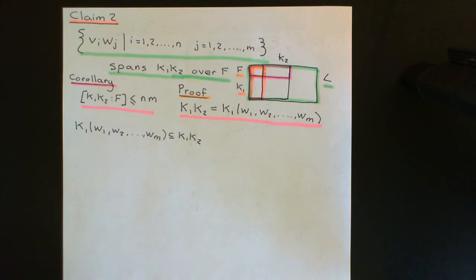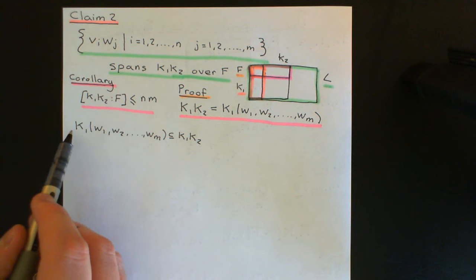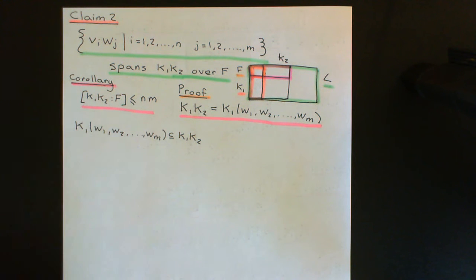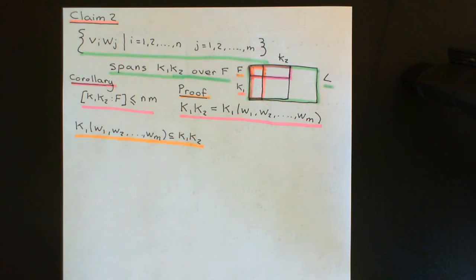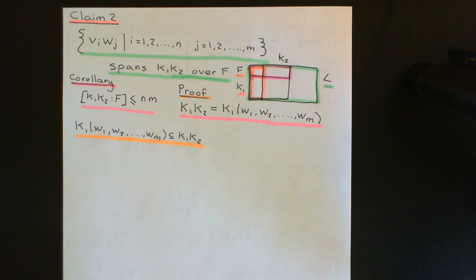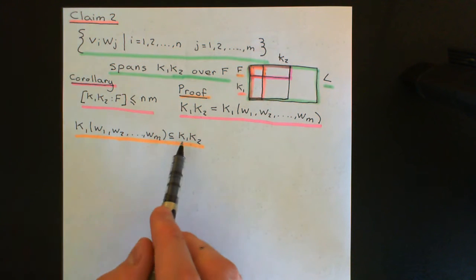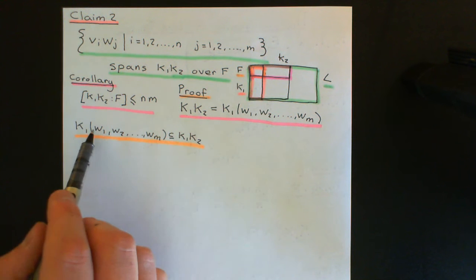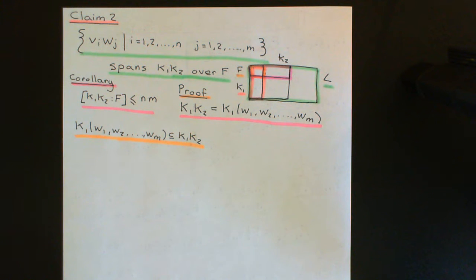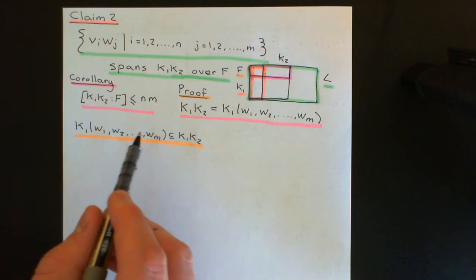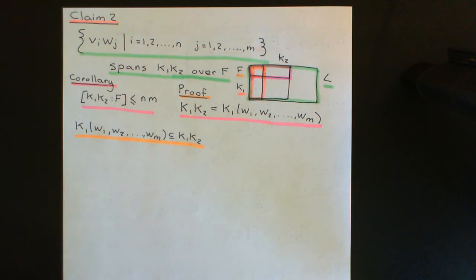The easy direction is showing that the field extension of k1 generated by w1, w2, all the way up to wm is contained within the composite of k1 and k2. The definition says it's the smallest field extension of k1 which contains w1, w2, all the way up to wm. The composite of k1 and k2 is a field extension of k1 that also contains all of these basis vectors of k2, so this is one of the fields intersected to make this, and therefore it's contained within it.